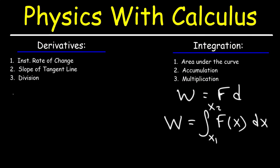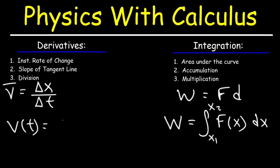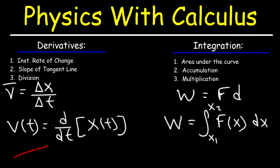For another example: average velocity is the change in position, or displacement, over time — so we're dividing displacement by time. This formula is associated with derivatives. It turns out that the instantaneous velocity as a function of time is the derivative of the position function with respect to time. You need to associate division with differentiation and multiplication with integration.